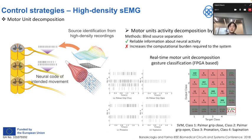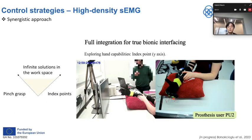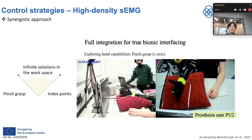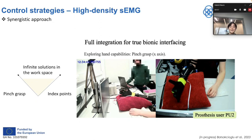Another approach uses neural codes separated from high-density EMG data. Although this requires more computational power, we can use more reliable information about neural activity. One demonstration uses a synergistic approach on a two-dimensional space, combining index point and pinch grasp as individual movements and combining them to perform a grasping gesture — essentially allowing infinite solutions in the workspace.